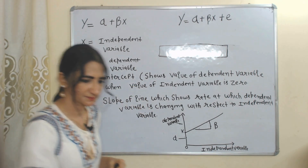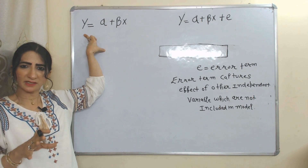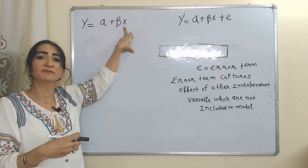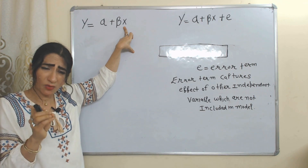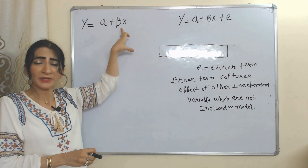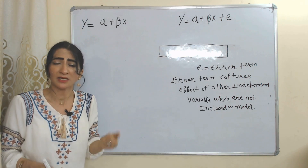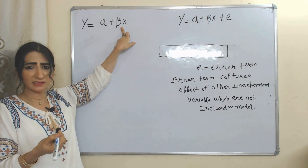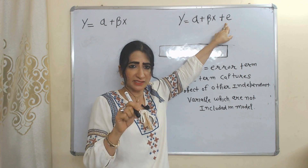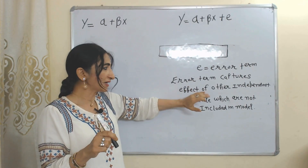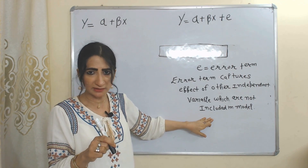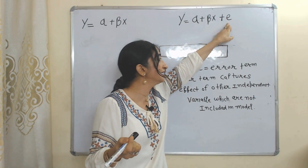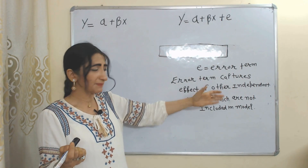Beta is the slope of the line, showing the rate at which the dependent variable changes with respect to the independent variable. Now suppose the dependent variable is demand and the independent variable is price — demand depends on price. But is price the only factor that influences demand? No, there are many other factors such as income, taste, preference, and fashion. Since this model includes only one independent variable, we add 'e', the error term, which captures the effect of other independent variables not included in the model.